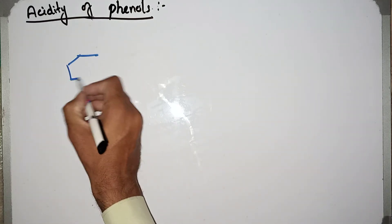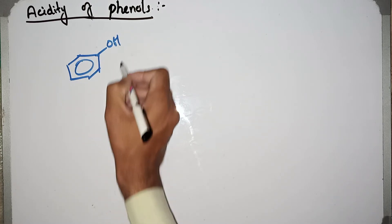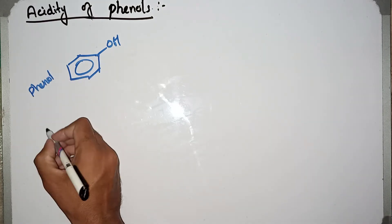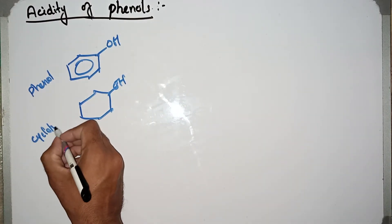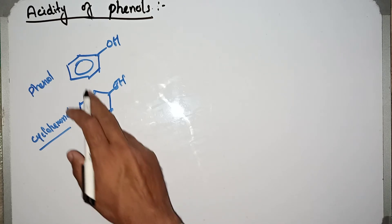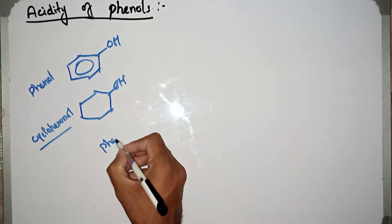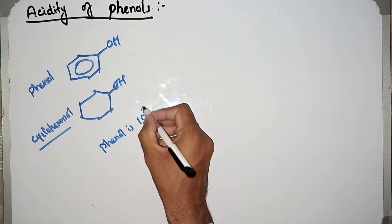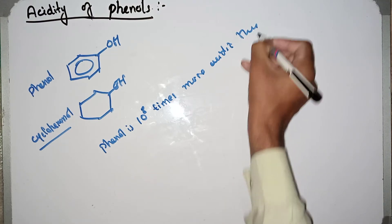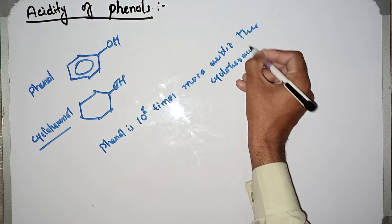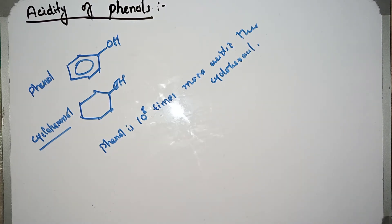Phenol is very acidic compared to simple cyclohexanol. This is the phenol structure, while this is cyclohexanol. Phenol is about 10 to the power 8 — that is, 100 million times — more acidic than cyclohexanol.